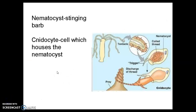All cnidarians have cells called cnidocytes — these are stinging cells. Stored inside the cnidocyte is something called a nematocyst, which is what actually causes the sting; it's a stinging barb. So on the tentacles we have the cnidocyte cell, and inside, coiled, is the nematocyst. If something were to touch that cnidocyte, the barb shoots out, causing the sting.